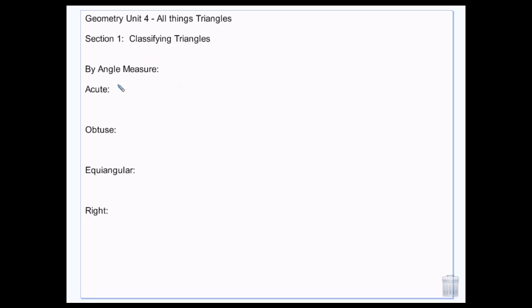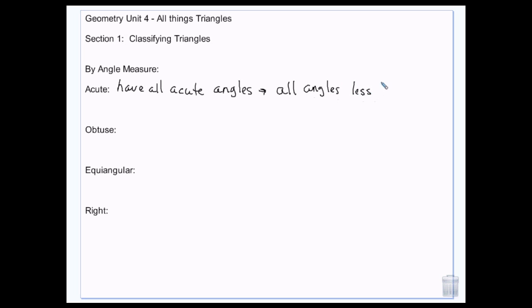If we're going to classify them by angle measure, we have acute triangles, which have all acute angles. So all angles are less than 90. Basically, these are kind of skinny triangles — the angles are small.